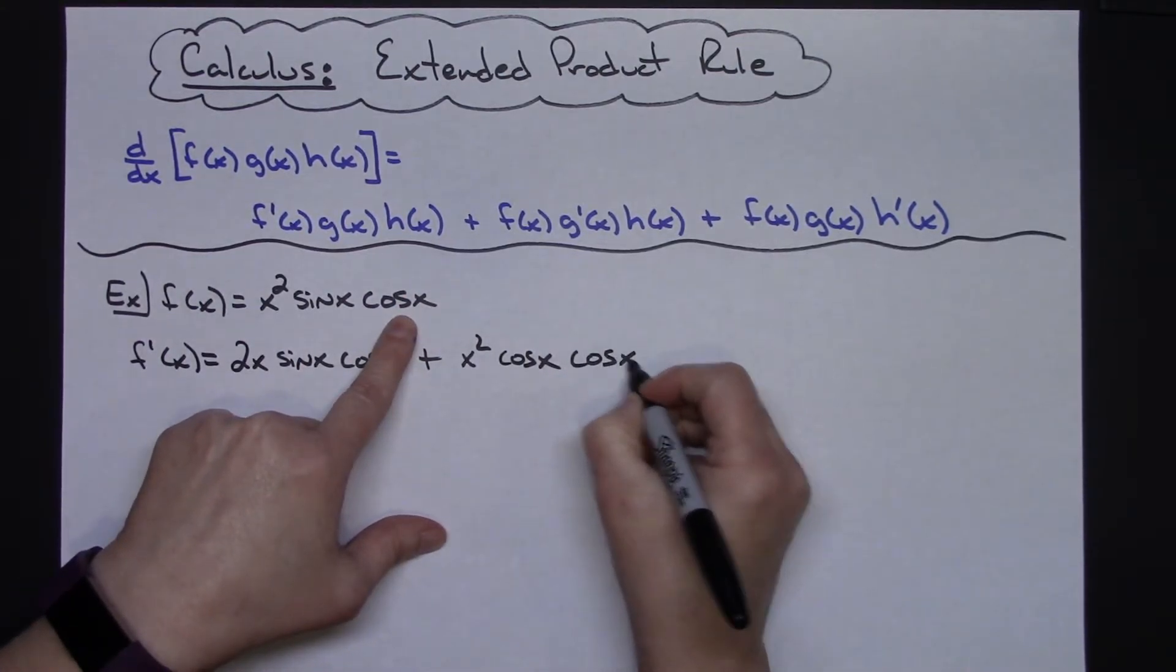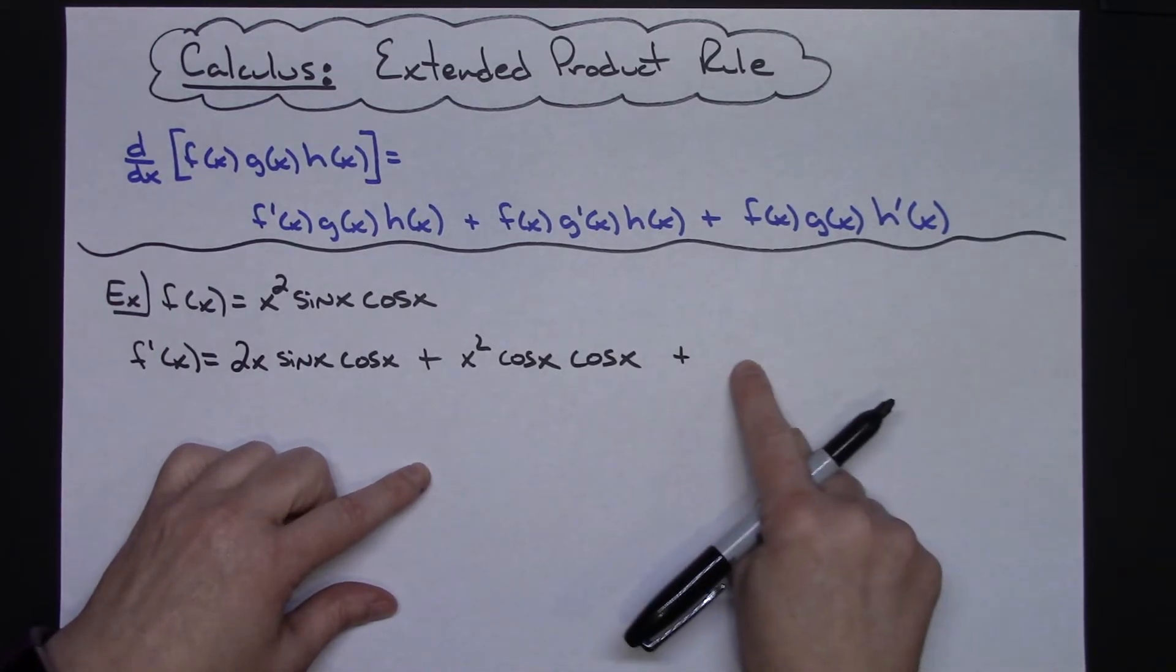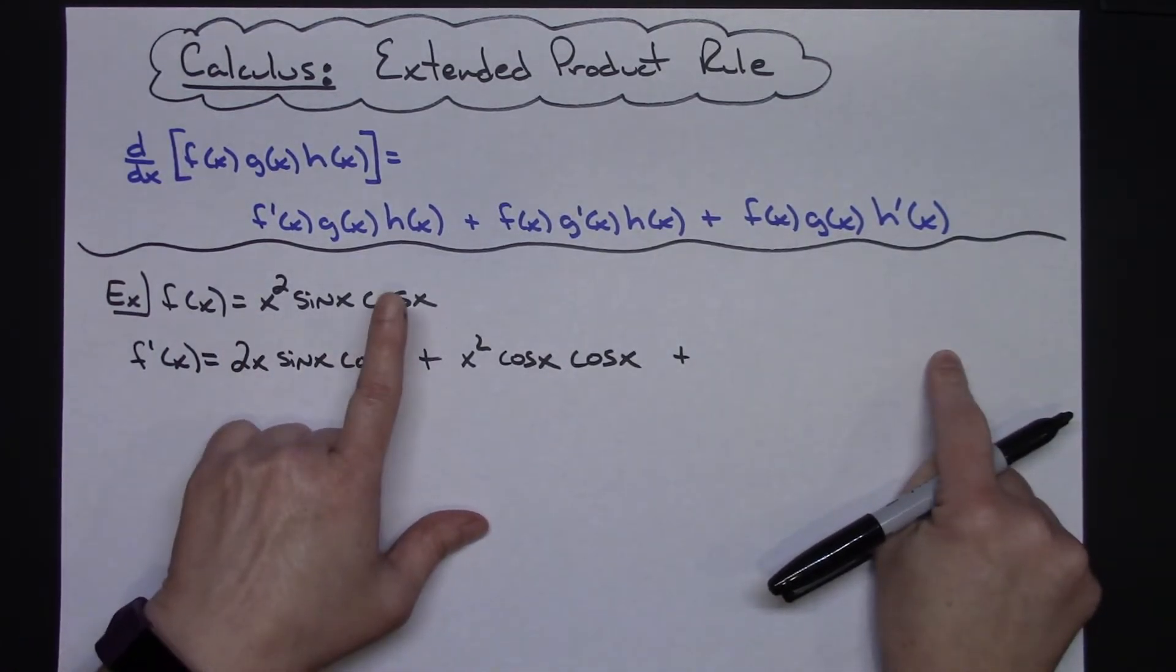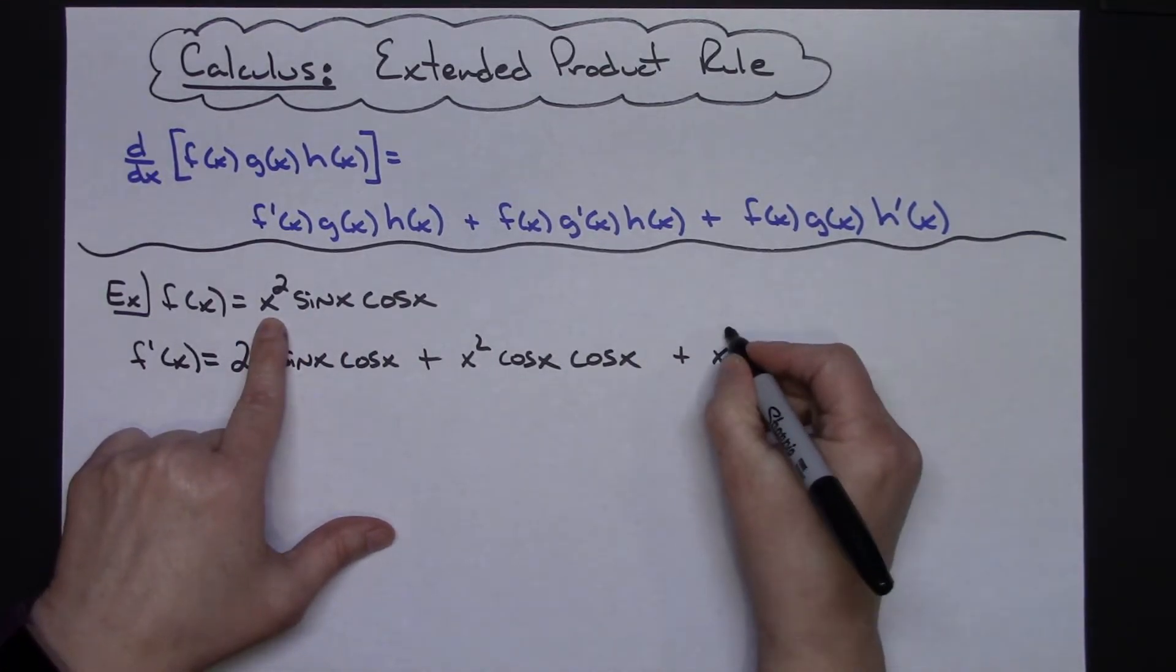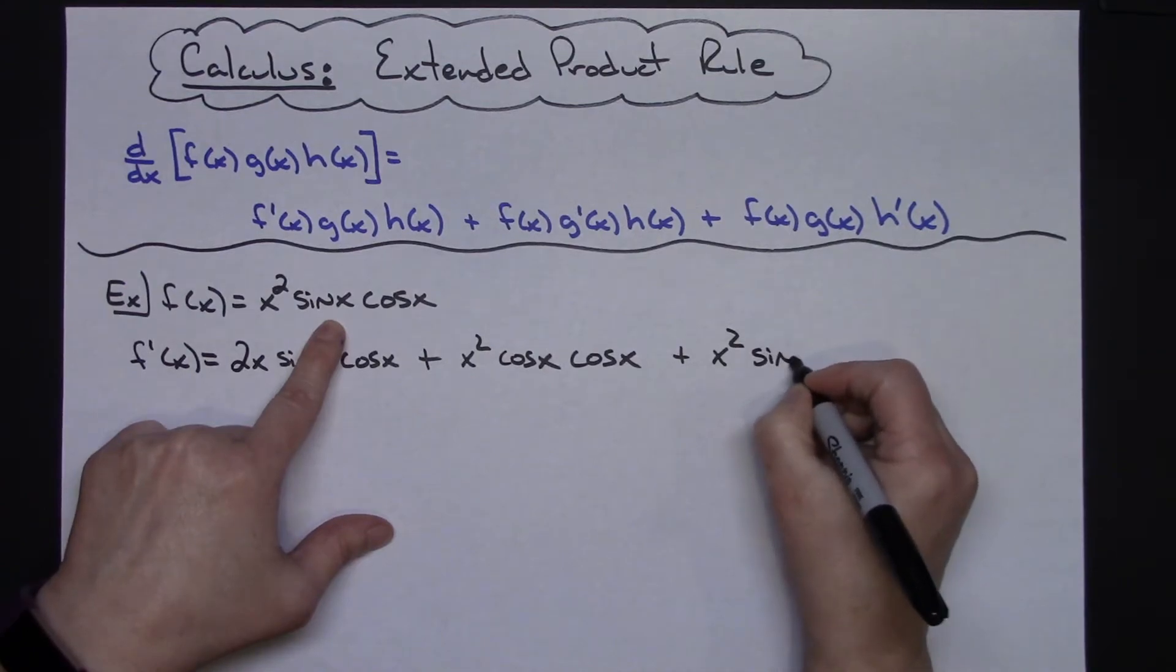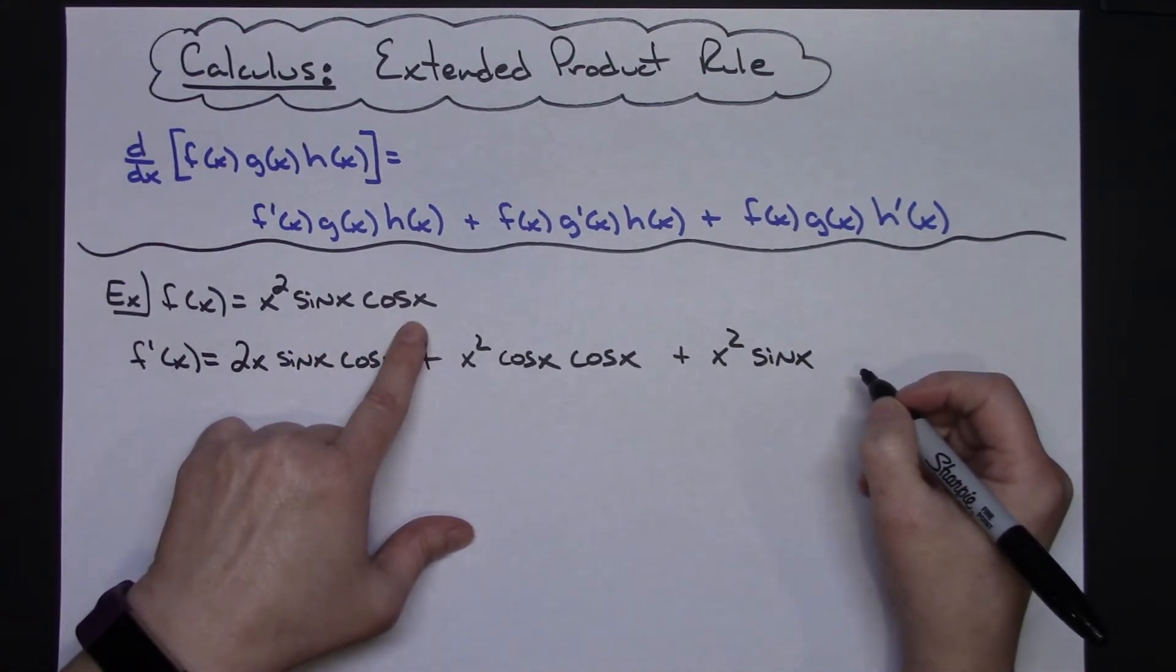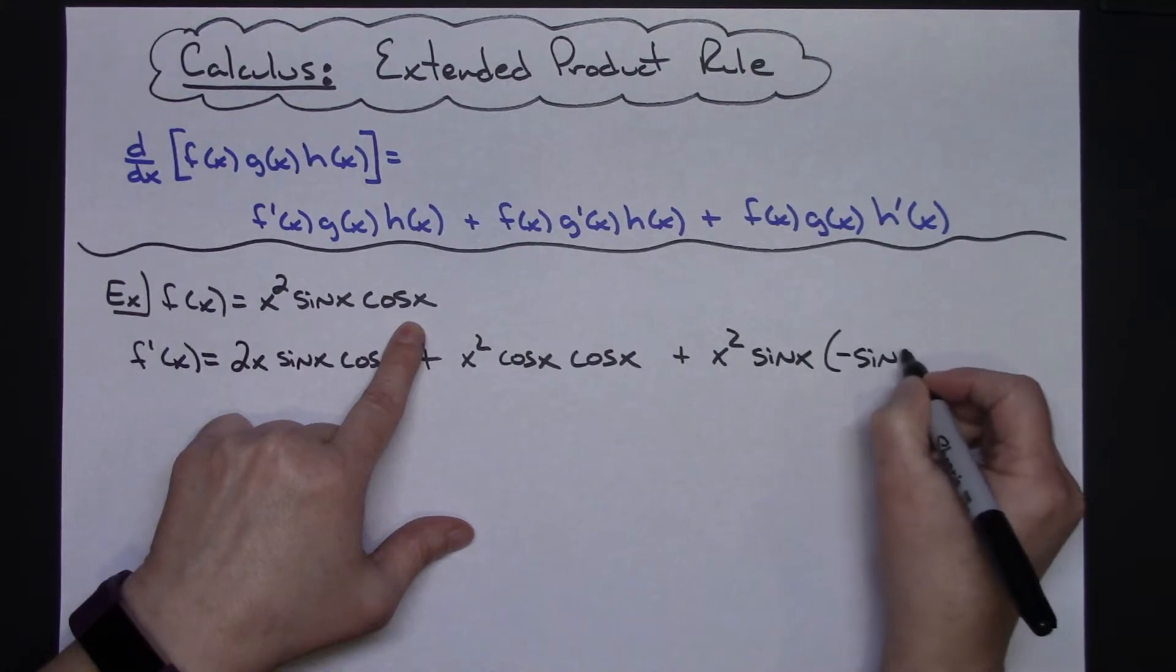In my last product I'm going to be taking the derivative of the cosine x, leaving the first two the same. So x² sin x, and then the derivative of cosine being negative sine x.